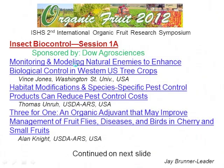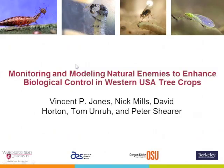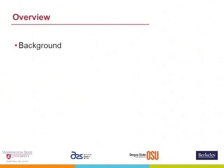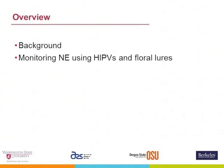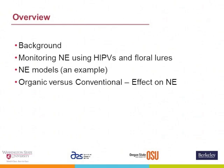This is going to be a real quick talk. As you can see by my abstract, I overthought the amount of time we were going to have, so I'll go through most of this stuff fairly quickly. I want to start off with a very short background, move to talking about monitoring natural enemies using herbivore-induced plant volatiles and floral lures, then talk about natural enemy models, organic versus conventional and the effects on natural enemies of different management practices, pesticide models, and then summarize the whole thing.